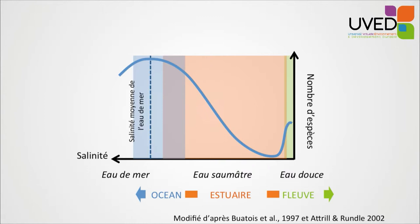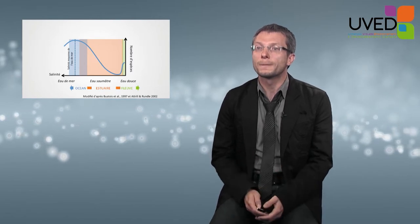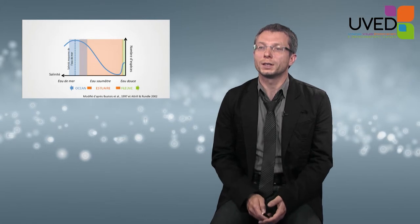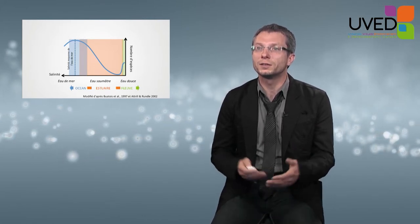We also have biodiversity gradients, especially if we look at the number of species found in these ecosystems. The maximum number of species can be found in the marine part of the estuary, on the coastal area or on the continental plateau. Then the number of species decreases from the downstream environment to the upstream environment. Further up we go in the estuary, and then when we reach the river, the number of species increases again.